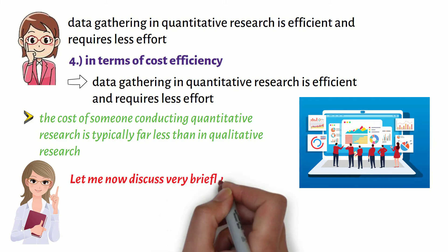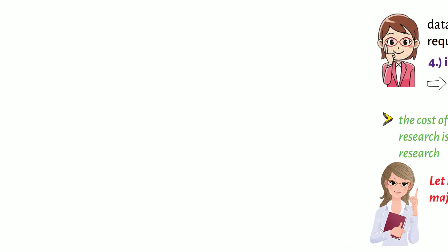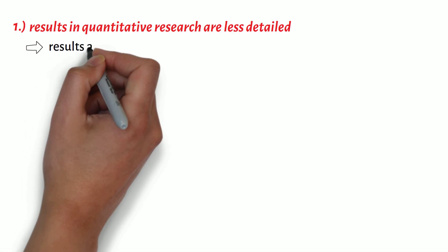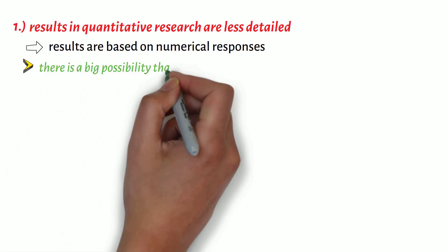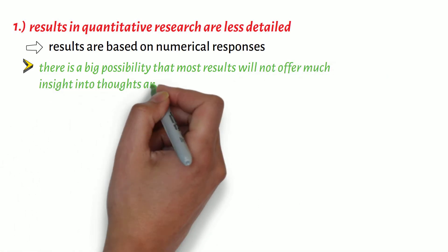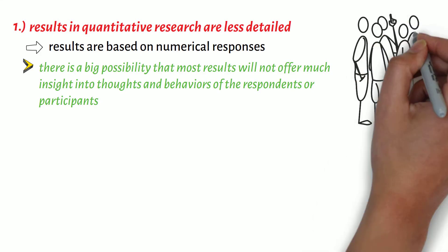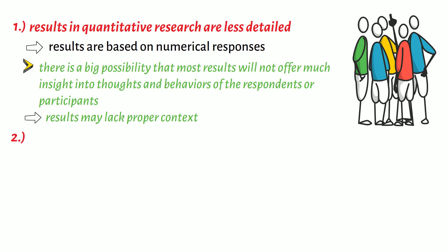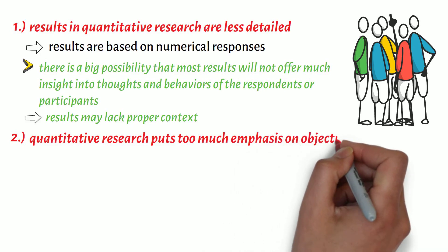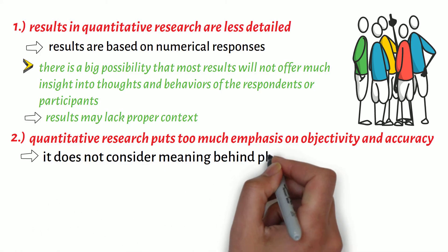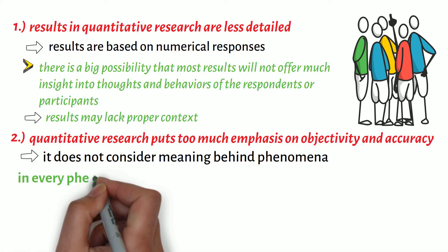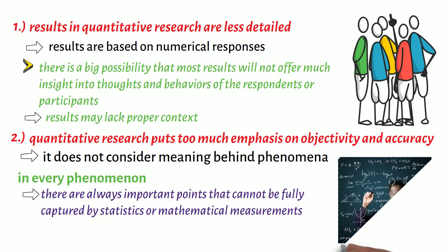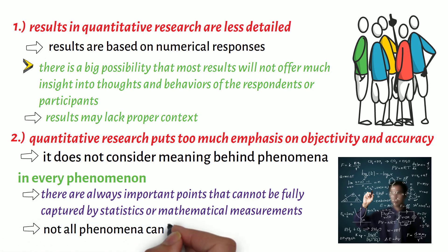Let me now discuss very briefly its major weaknesses. First is that results in quantitative research are less detailed. Since results are based on numerical responses, there is a big possibility that most results will not offer much insight into the thoughts and behaviours of the respondents or participants. In this way too, results may lack proper context. Second, because quantitative research puts too much emphasis on objectivity and accuracy, it does not consider meaning behind phenomena. In every phenomenon, there are always important points that cannot be fully captured by statistics or mathematical measurements. Indeed, not all phenomena can be explained by numbers alone.